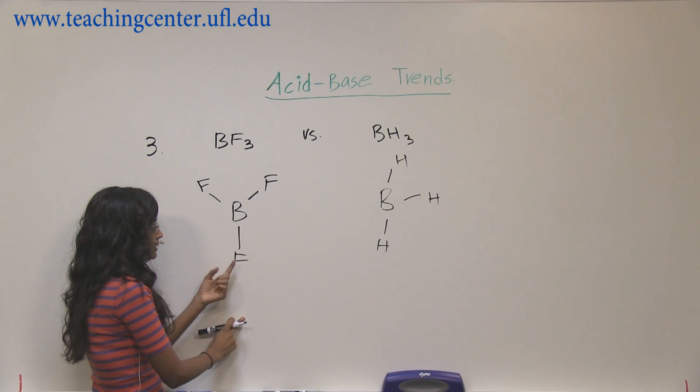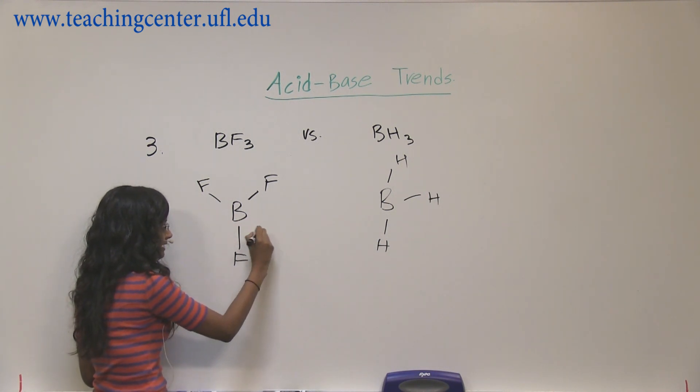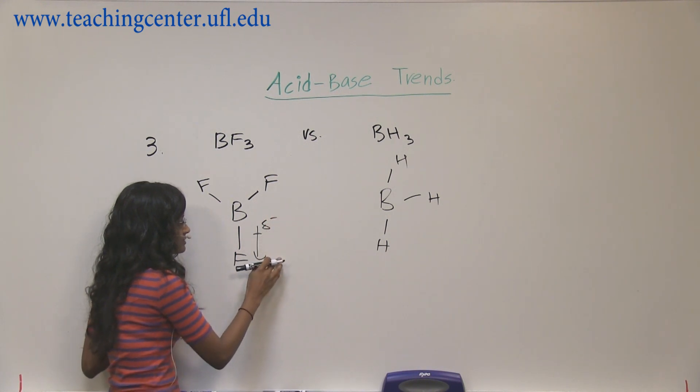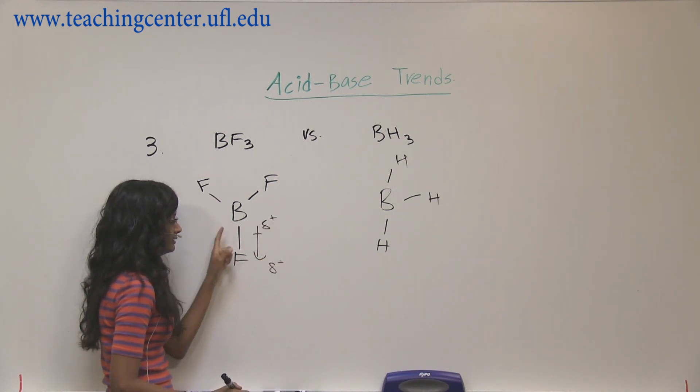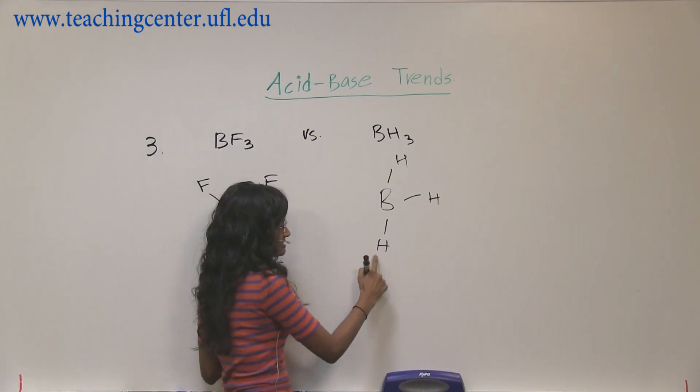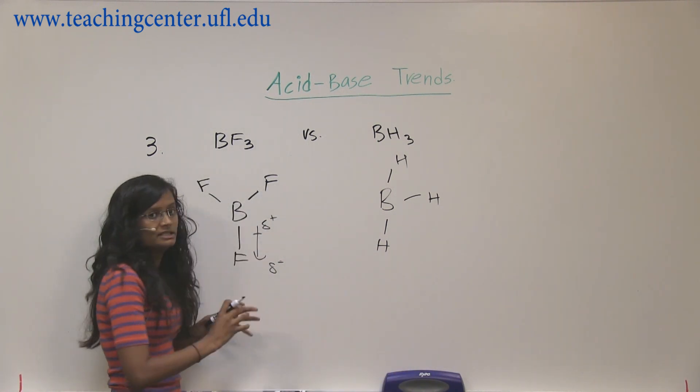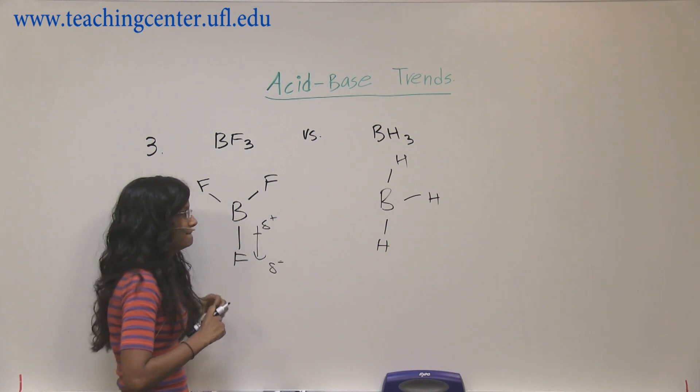For the first one, you have the fluorines, which are highly electronegative. So you're going to have these relations here, whereas hydrogen doesn't do anything. So fluorine is making it deficient, more deficient.